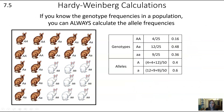If you know the genotype frequencies in a population, you can always calculate the allele frequencies. In this case, if we count up all of the individual bunnies who have big A big A, that's four out of 25. The big A little a is 12 out of 25, and little a little a is 9 out of 25. Because we know all of their genotypes, we can figure out how many big A alleles and how many little a alleles there are in the population.